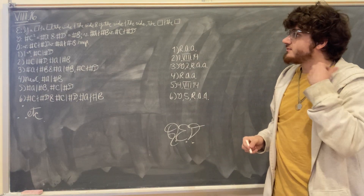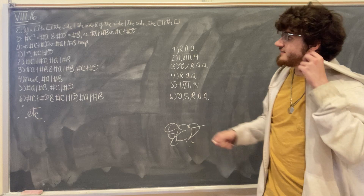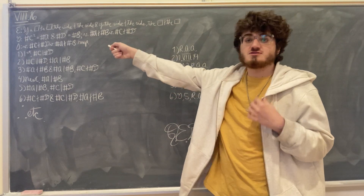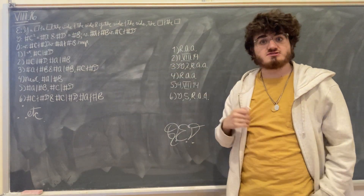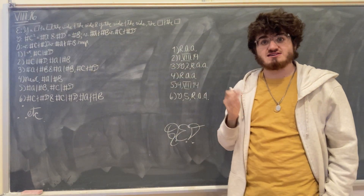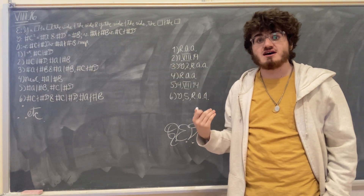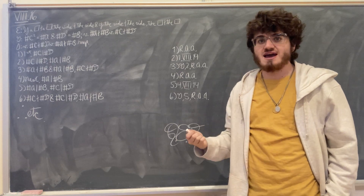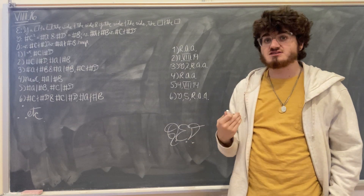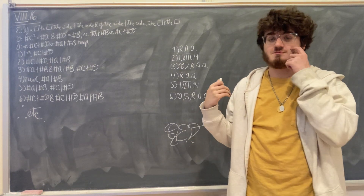Regardless, we're given the same thing. We're given two square numbers, A and B, and we're also given their sides, C and D, so that C squared makes A, and D squared makes B.